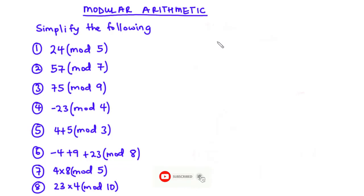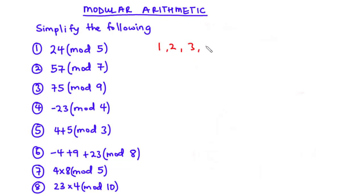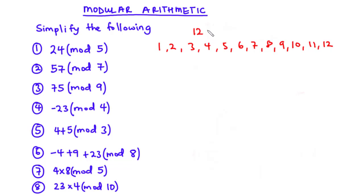The best way to introduce modular arithmetic is to consider the face of a clock. In this video we are going to consider the 12-hour clock. The 12-hour clock goes from 1, 2, 3, 4, 5, 6, 7, 8, 9, 10, 11, and 12.